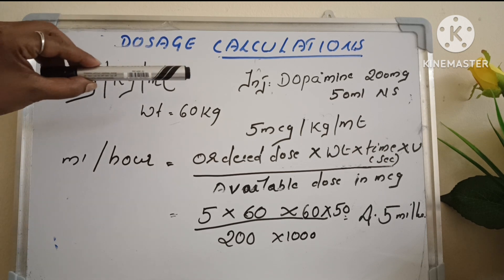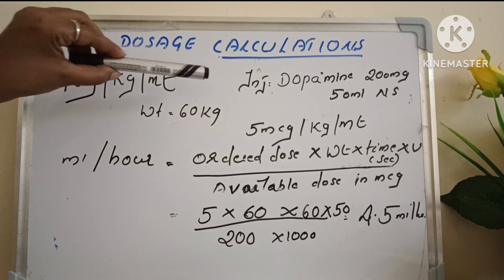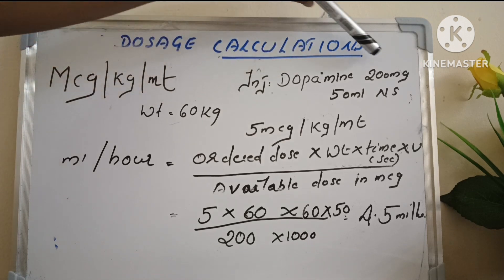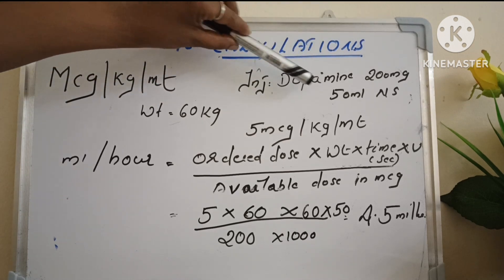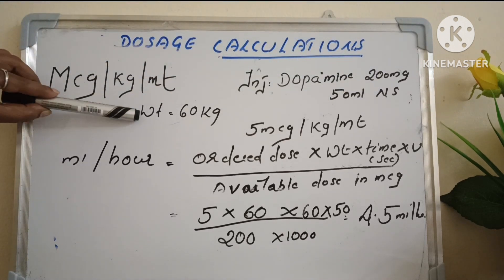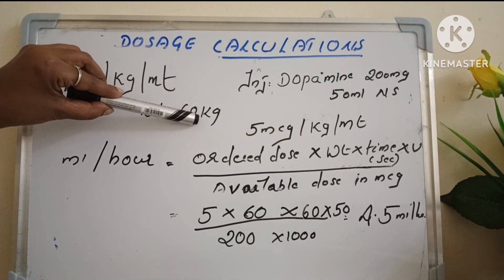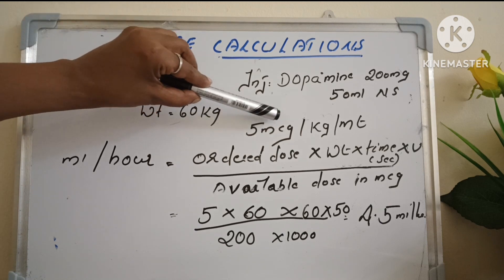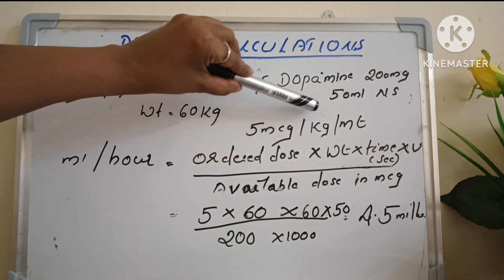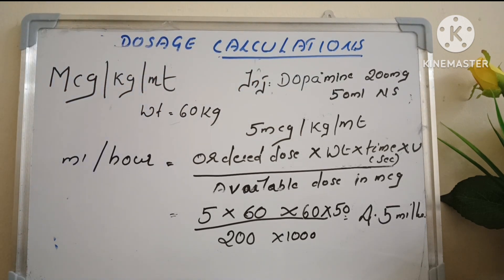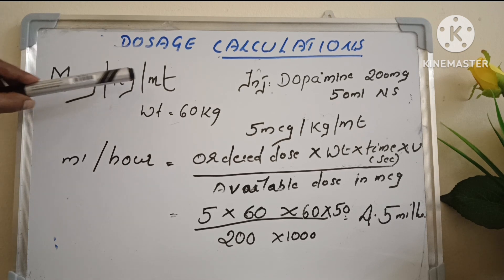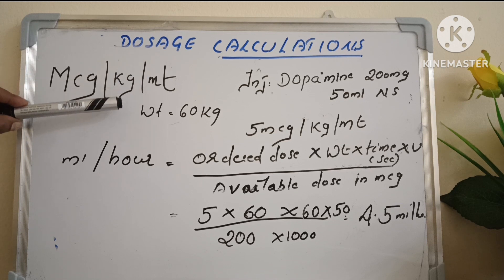Here is an example. A physician places an order for injection dopamine 200 mg in 50 ml saline. The weight of the patient is 60 kg, to be administered at 5 microgram per kg per minute. The difference from microgram per minute and microgram per kg per minute is that in per kg per minute, we have to calculate according to the weight of the patient.